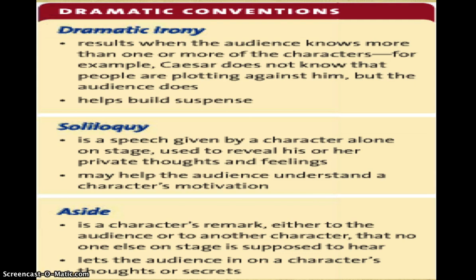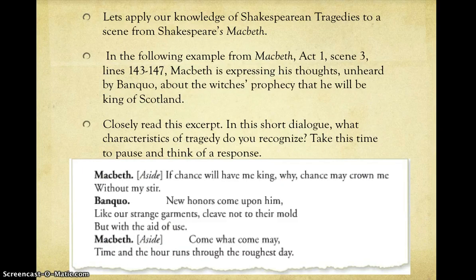Now that we have discussed some of the characteristics of Shakespearean tragedies, let's apply our knowledge to a scene from Shakespeare's Macbeth. In the following example from Macbeth, Act 1, Scene 3, Lines 143–147, Macbeth is expressing his thoughts — unheard by Banquo — about the witches' prophecy that he will be king of Scotland. Closely read this excerpt. What characteristics of tragedy do you recognize? Take this time to pause and think of a response.